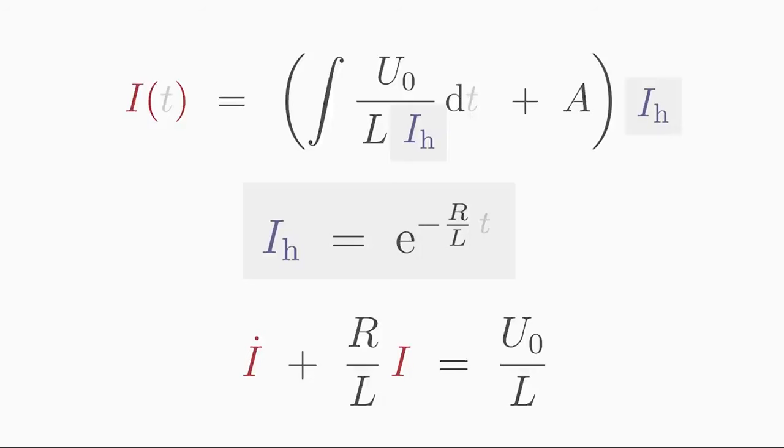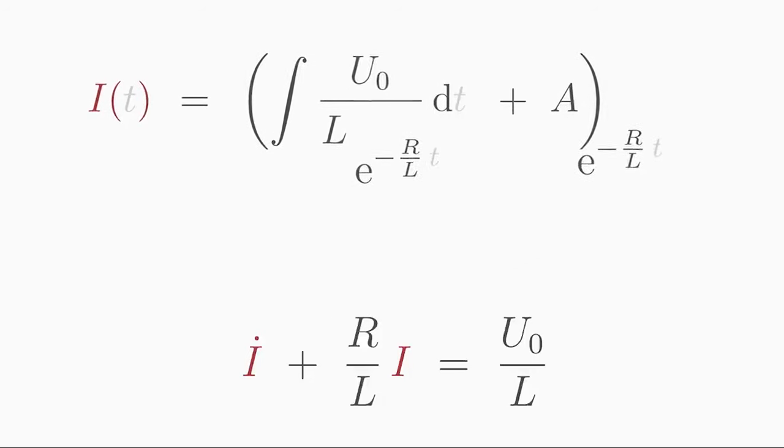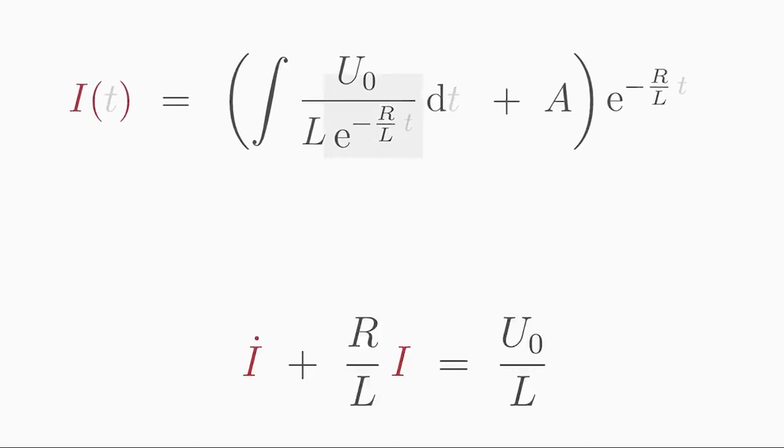Let's insert it into the inhomogeneous solution formula. Note that 1 over the exponential function containing a minus in the exponent is simply equivalent to the exponential function without the minus sign.